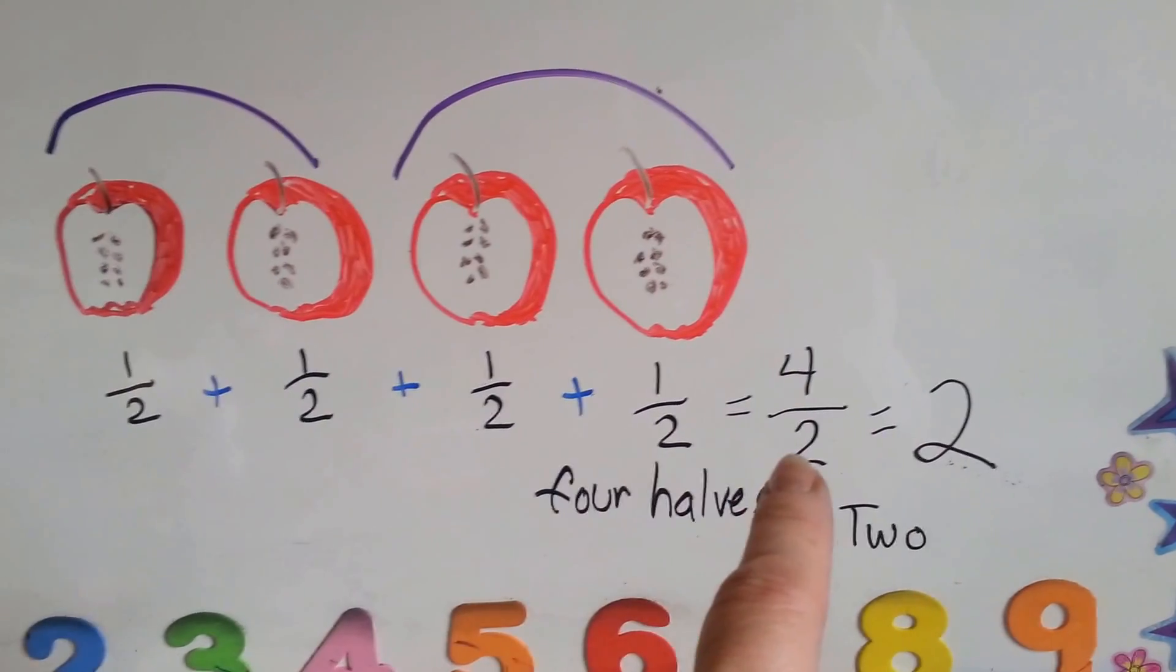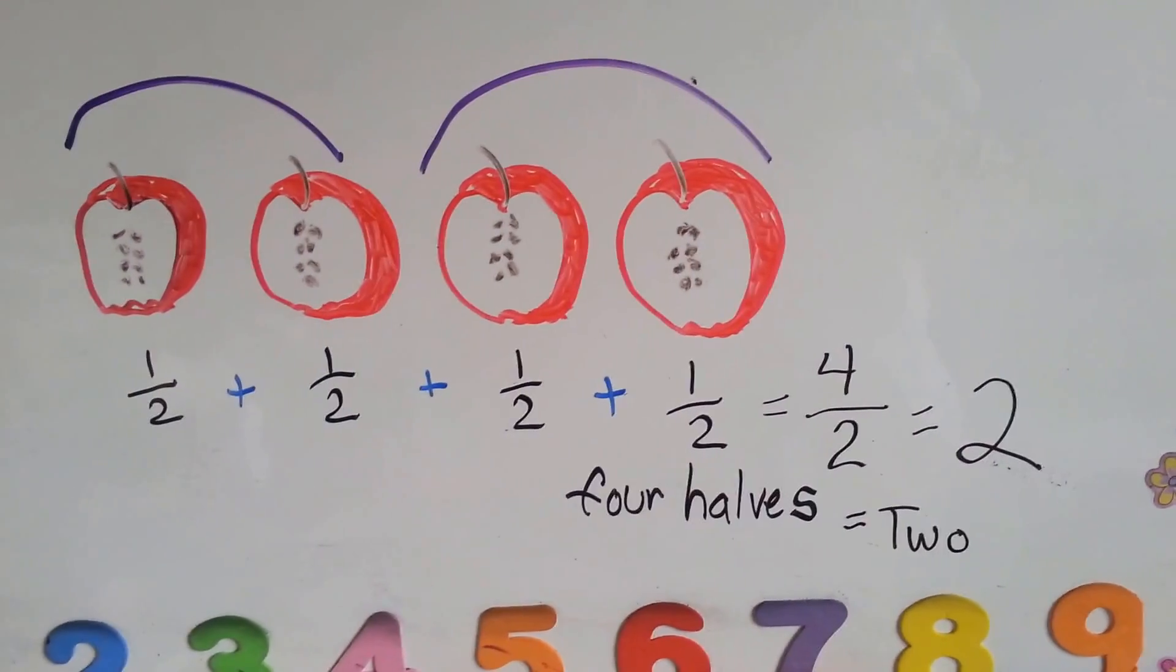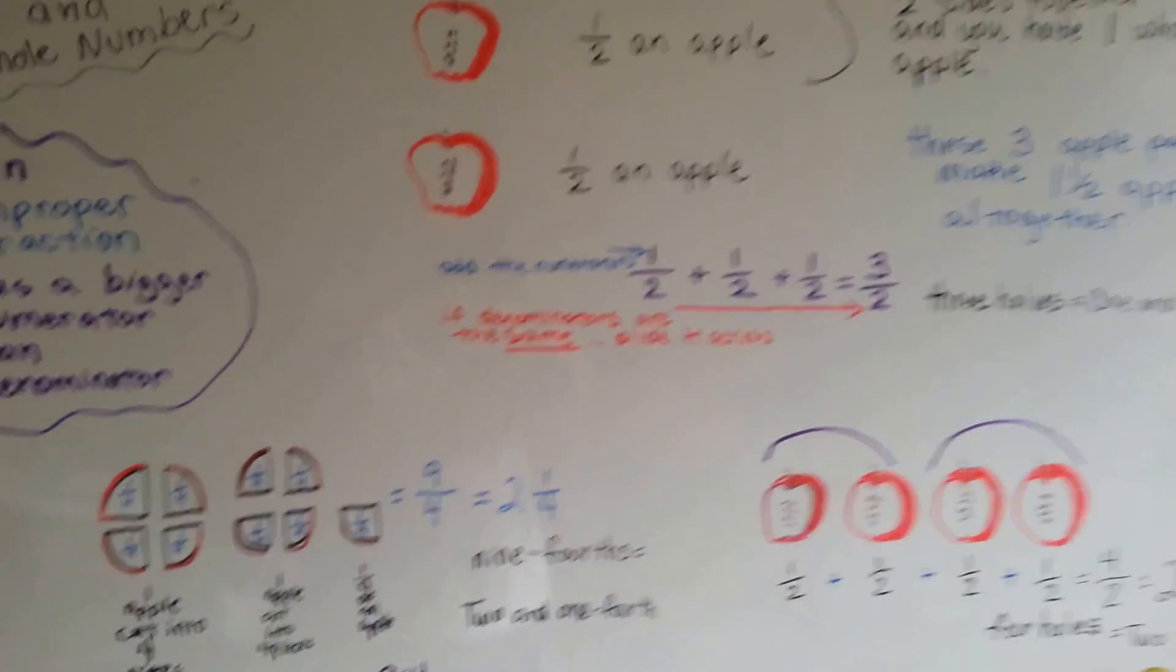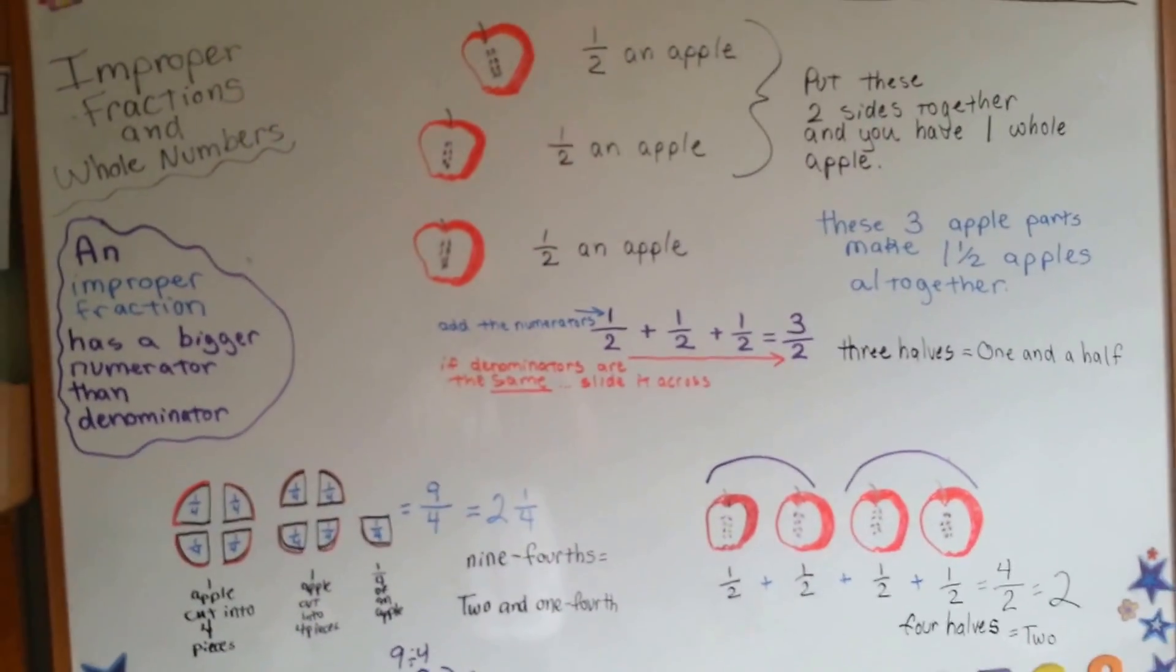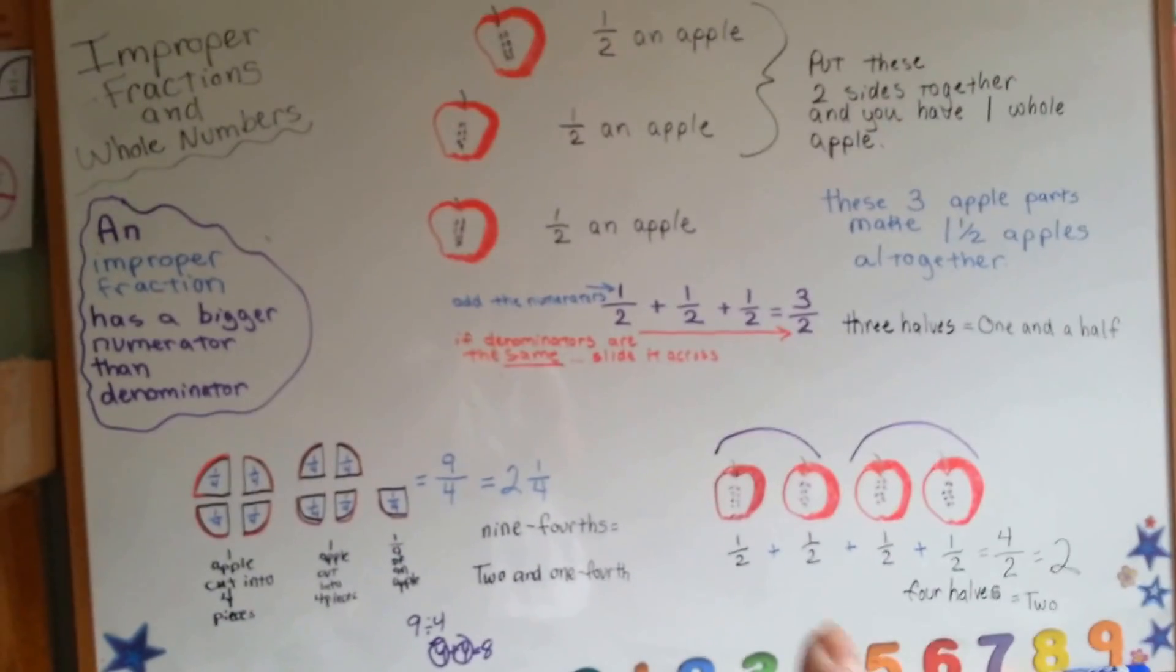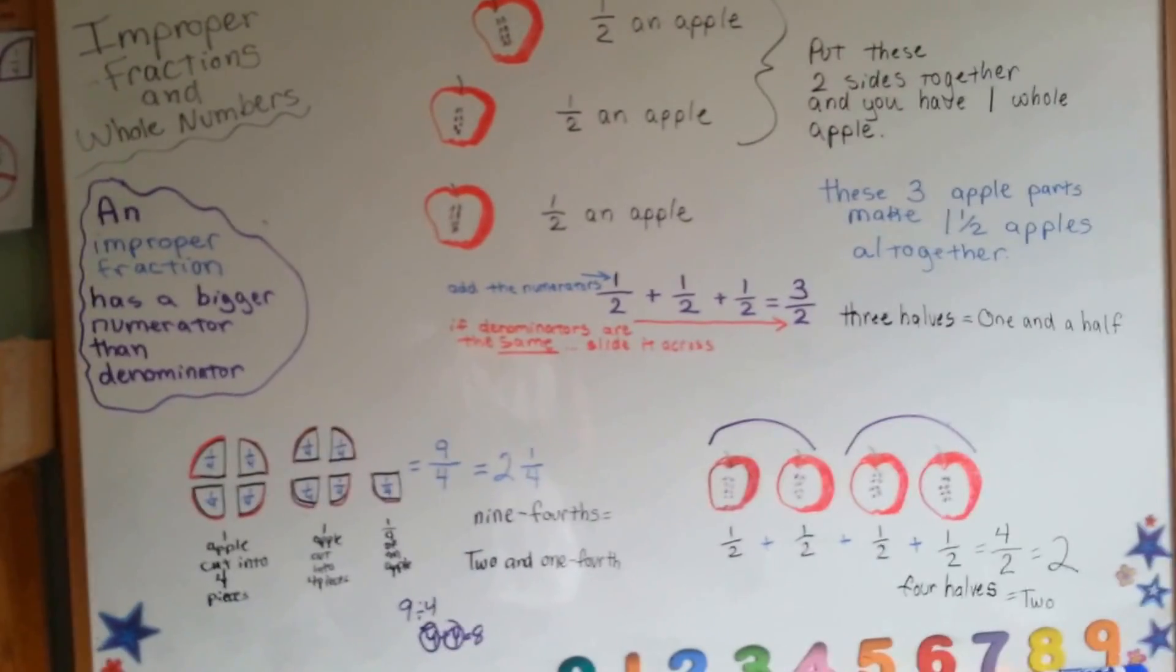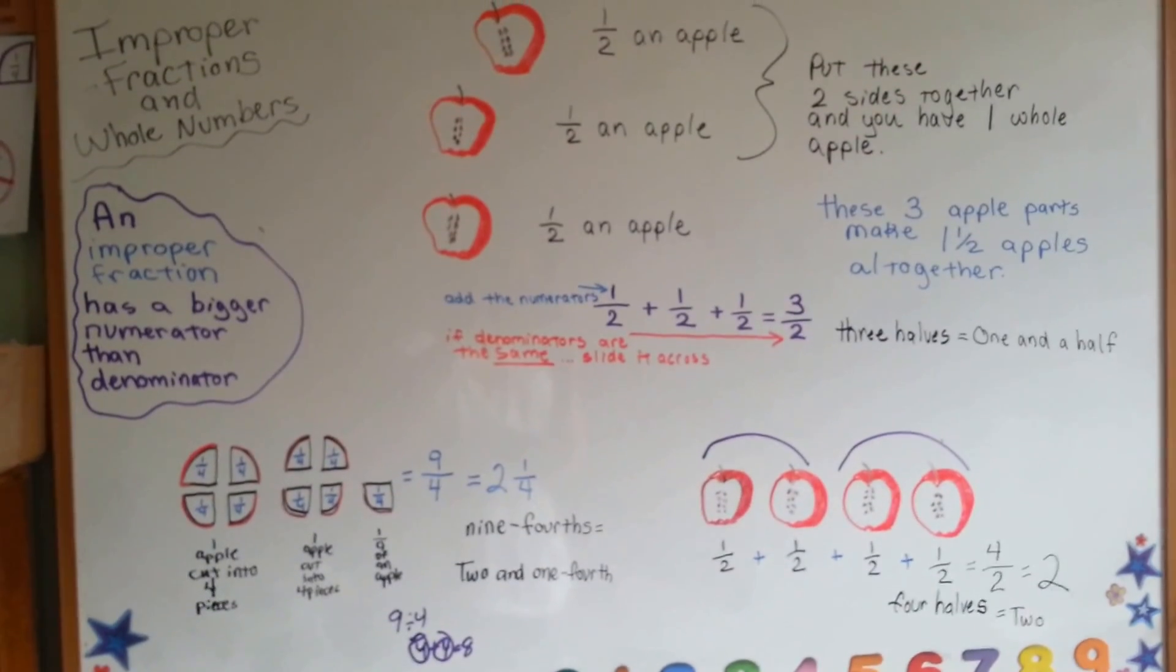See how an improper fraction can be a whole number? So, those are improper fractions, and that's how they relate to whole numbers. All you have to do is see how many times the bottom number can fit into the top one, and that will figure out how many whole numbers there are inside of it.